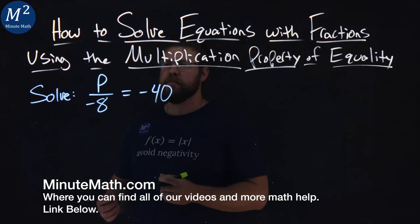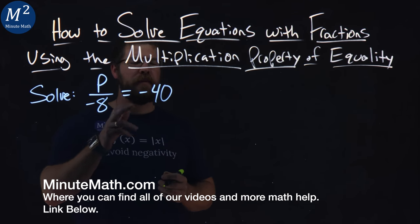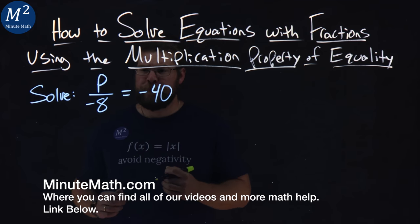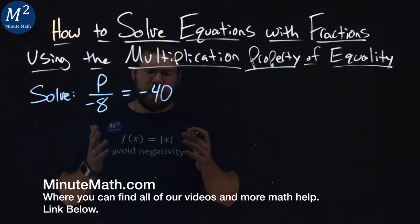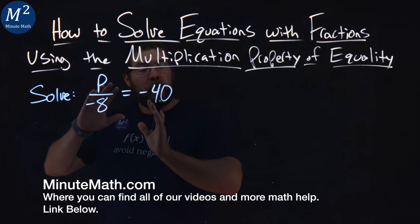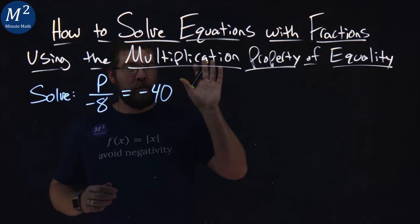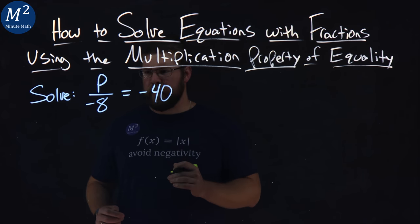We're given this problem right here: Solve P over negative 8 equals negative 40. Well, the multiplication property of equality states that if we multiply one side of the equation by a number, we can multiply the other side of the equation by the same exact number.